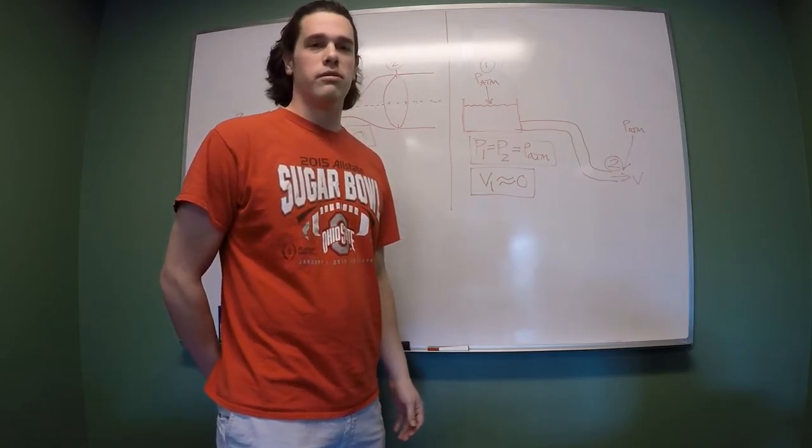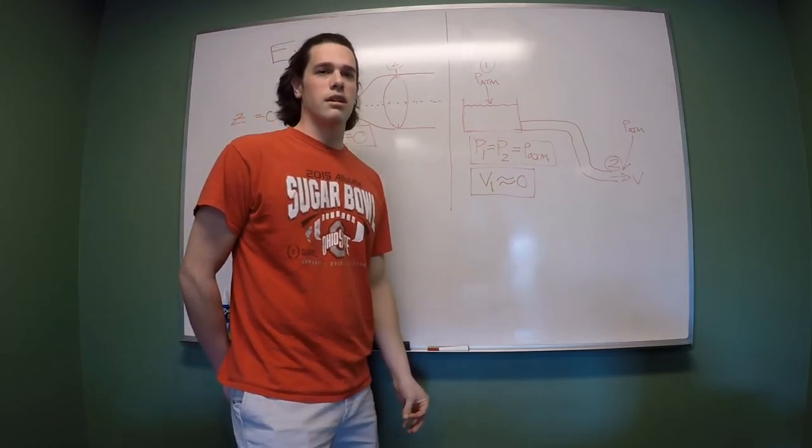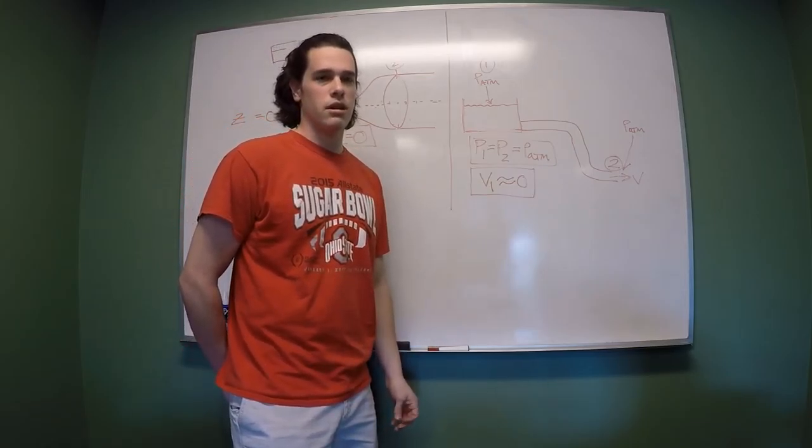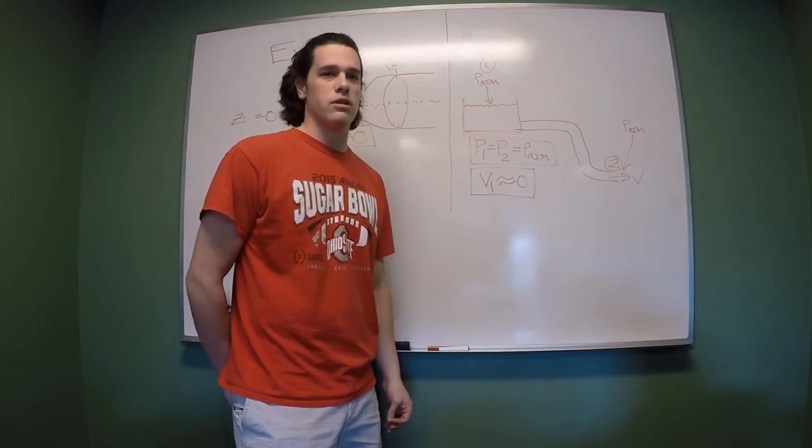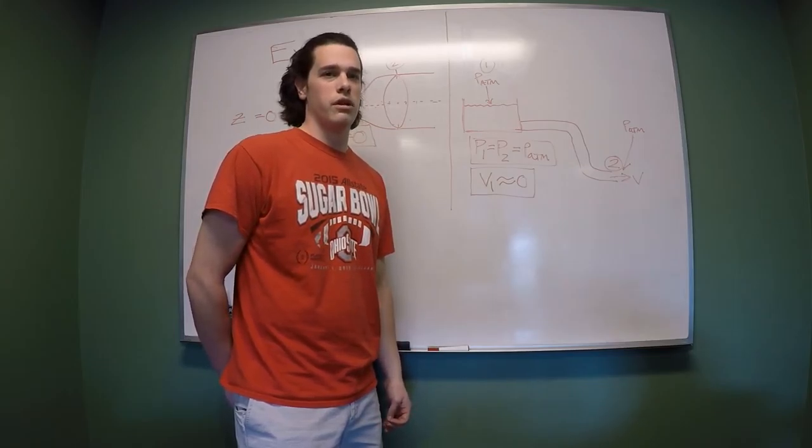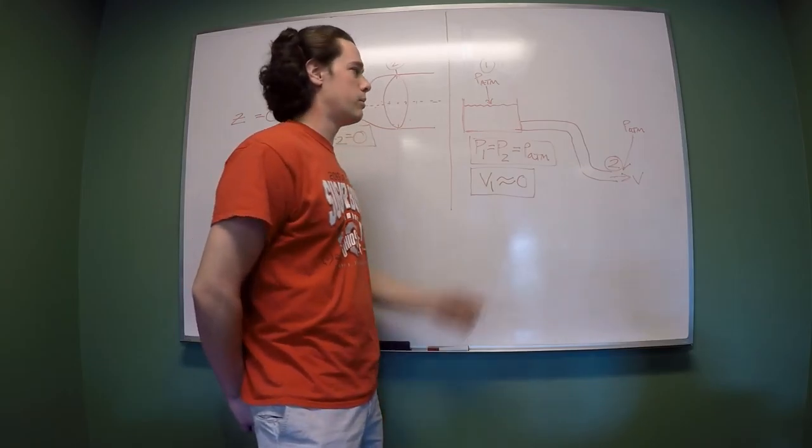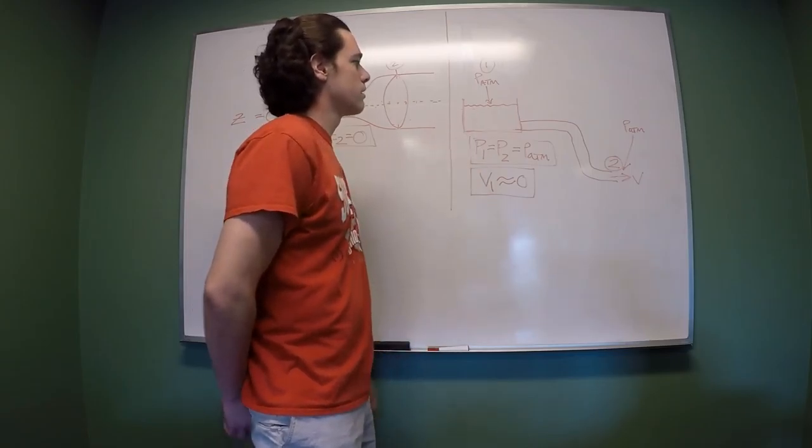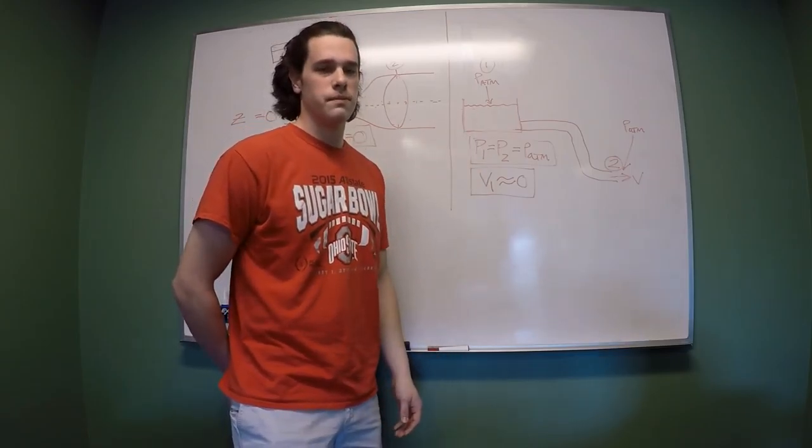Finally, when a point of reference has low enough velocity, it can be assumed to equal zero. This is because the other contributing terms in the equation are much larger compared to the velocity, and that would be point one right here at the tank surface.